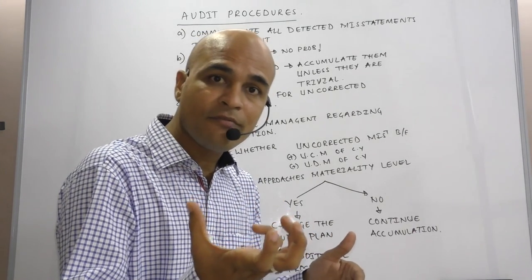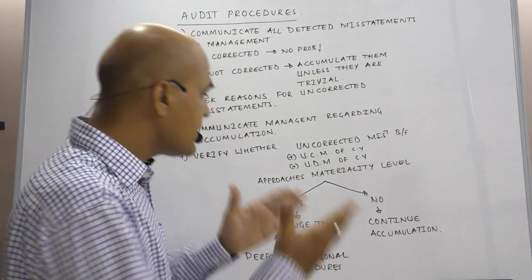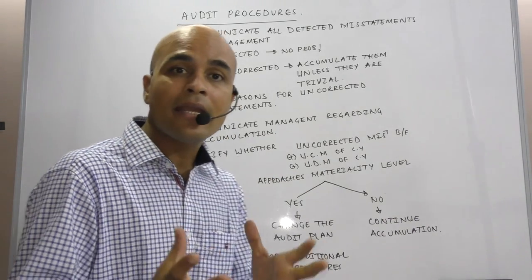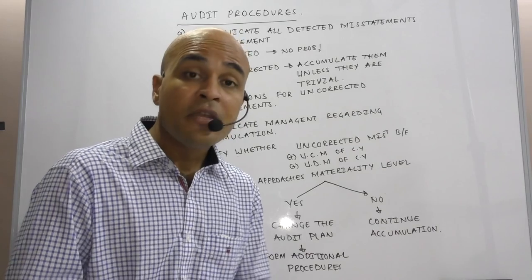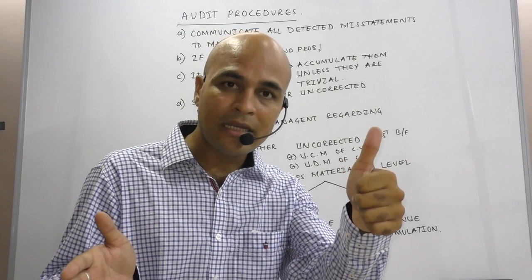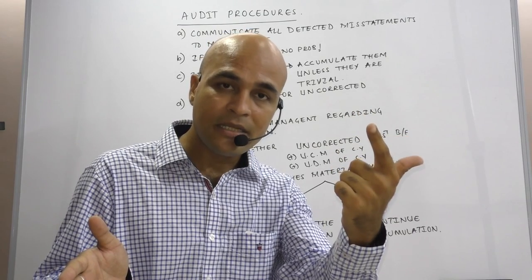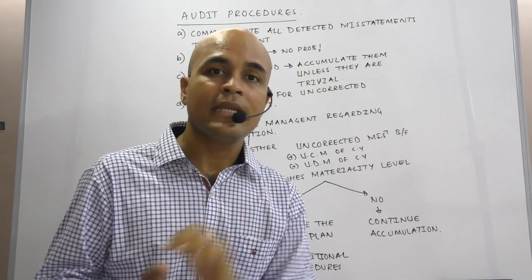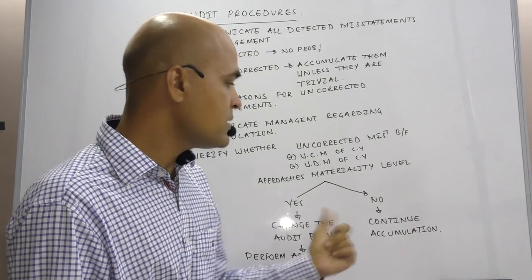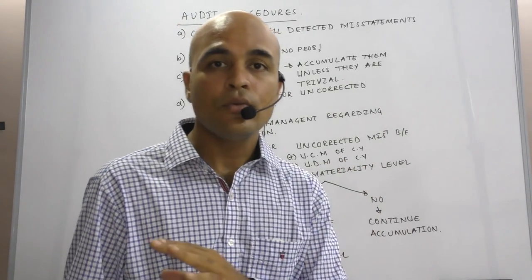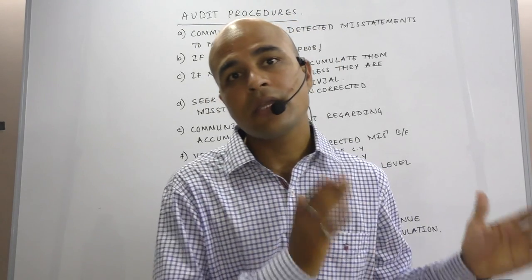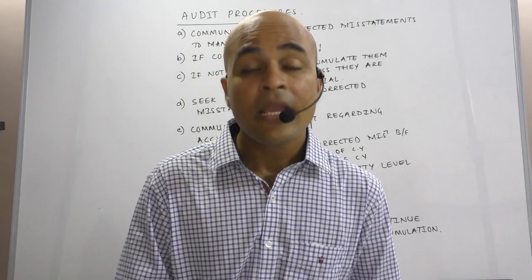Understand the concept of materiality and apply it to undetected misstatements, uncorrected misstatements, and accumulated misstatements. Verify whether the aggregate of uncorrected and undetected misstatements approaches the materiality level. If it approaches the materiality level, perform additional procedures. Otherwise, you need not perform additional procedures — continue the accumulation of misstatements.